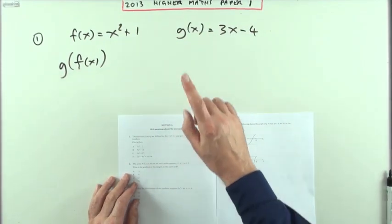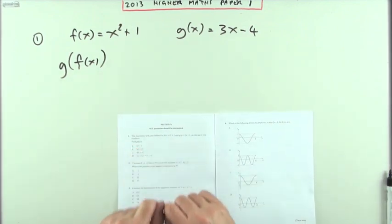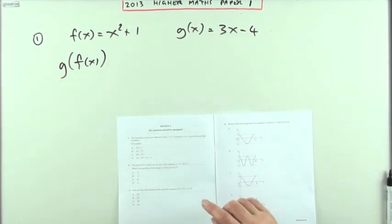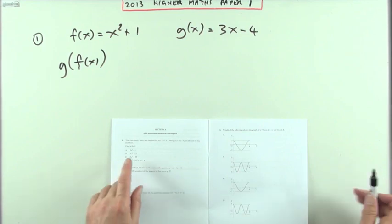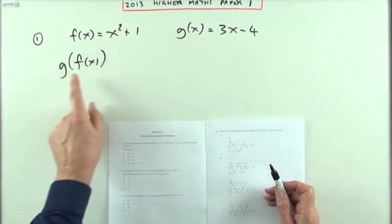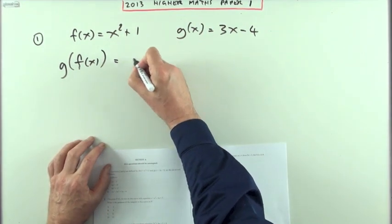Number one then, from the 2013 Higher Maths Paper 1. Objective questions, multiple choice. What have we got? Here are two functions. Find g of f of x.